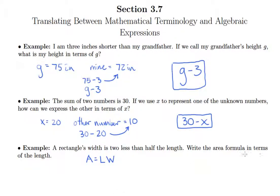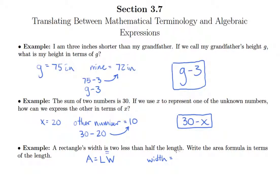It's saying write the whole area formula just in terms of length. The width is two less than half the length — so width equals two less than half the length. Remember, 'is' means equals.